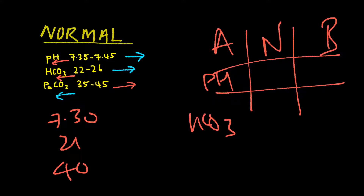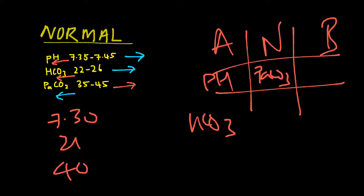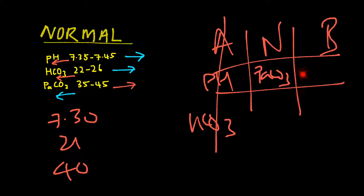Lastly, for PaCO2 it's 40, so 40 falls under the normal range. PaCO2 under the normal range. When you draw your tic-tac-toe, it's going to be a straight line this way. Since the pH is under the acid column, it is acidosis. HCO3 is metabolic, so you have metabolic acidosis. The PaCO2 is not compensating the acidosis since it's in the normal range. The interpretation would thus be uncompensated metabolic acidosis.